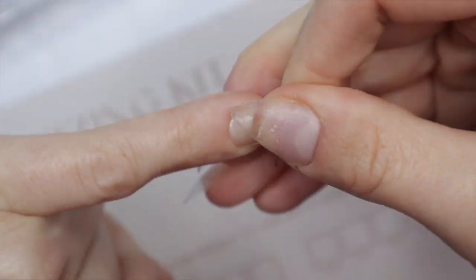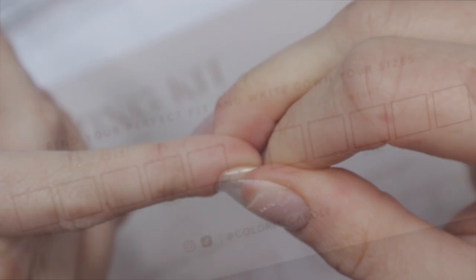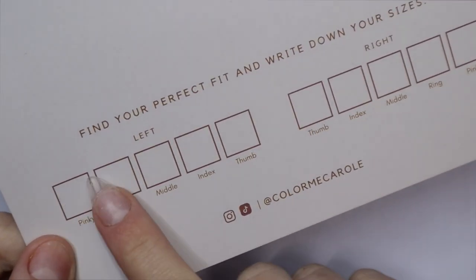So what I do after I size each tip is I look at the free edge of the tip and look for the number and then I write it in the appropriate spot here at the bottom of the card.